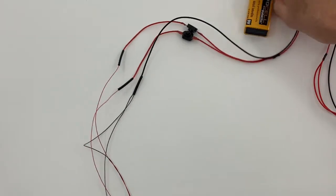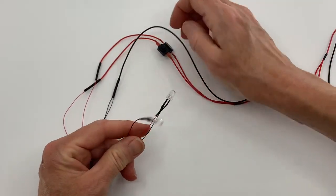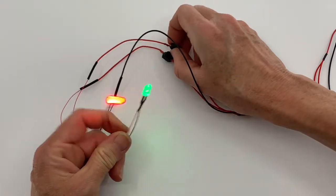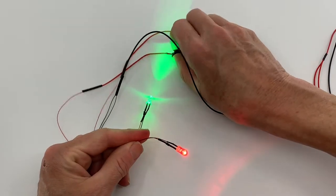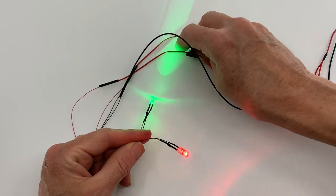So now you can see I can turn on either my green light or my red light, or I could turn on just one, or I could turn on both.